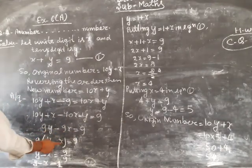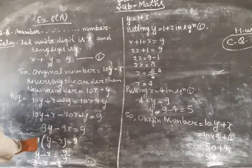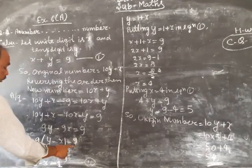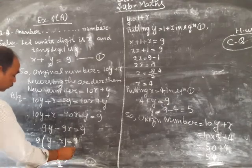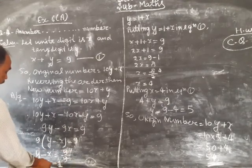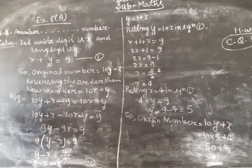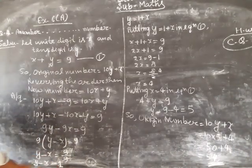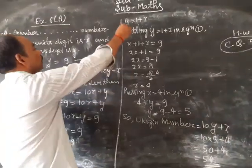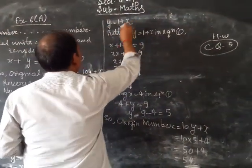Now simplifying, 9y minus 9x equals 9. Dividing by 9, we get y minus x equals 1, so y equals 1 plus x.